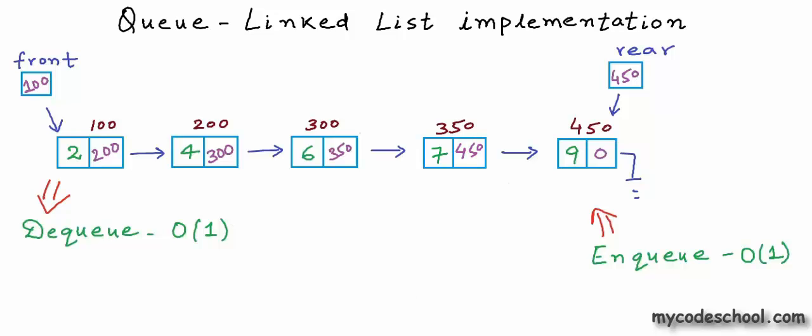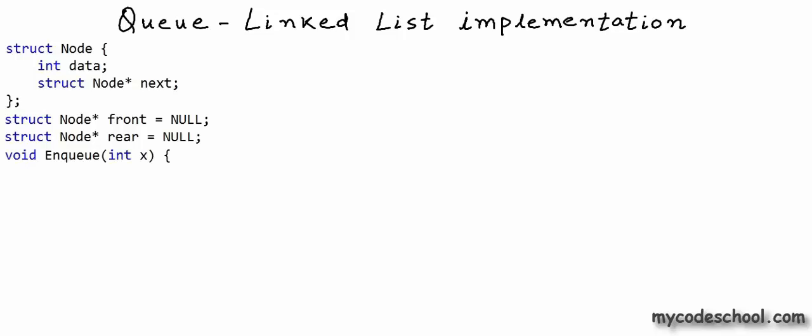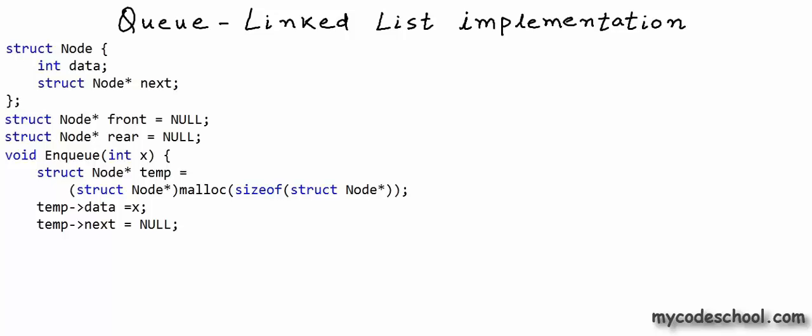Let's see how the real C code looks for this design. We declare node as a structure with two fields — one for data and one for the address of the next node. Instead of a single head pointer, we declare two pointers to node: front and rear, both initially set to null. These variables are defined in global scope so they are accessible to all functions. The enqueue function takes an integer as argument and first creates a node using malloc in C or the new operator in C++, pointed to by a local variable temp.